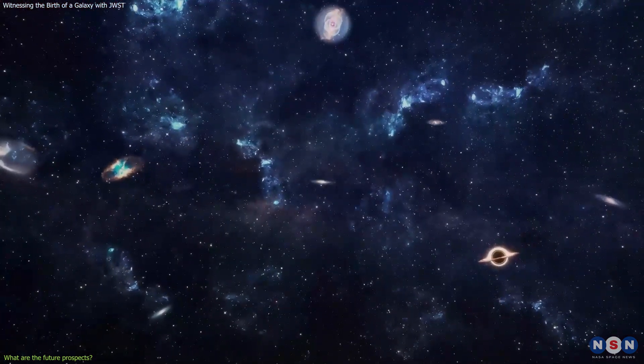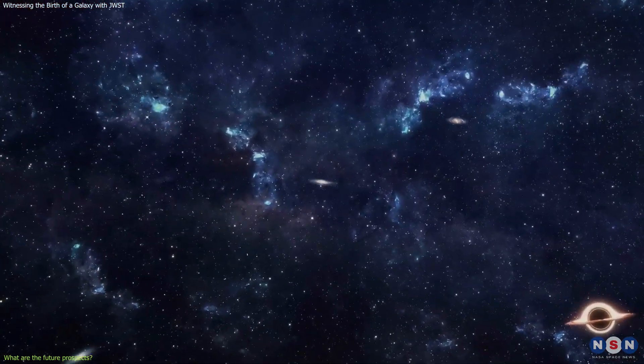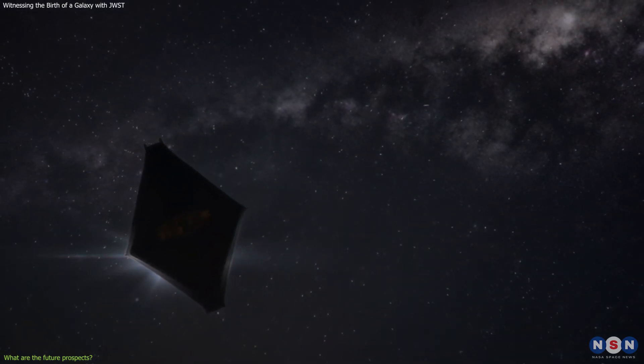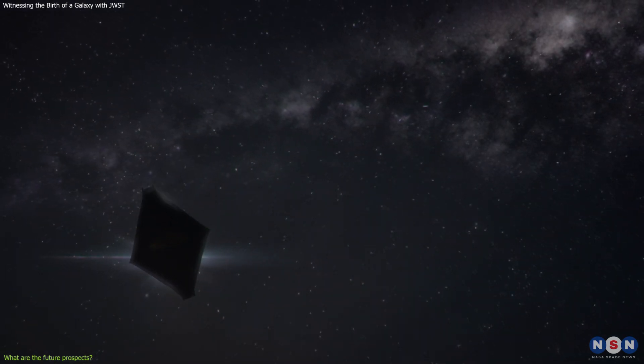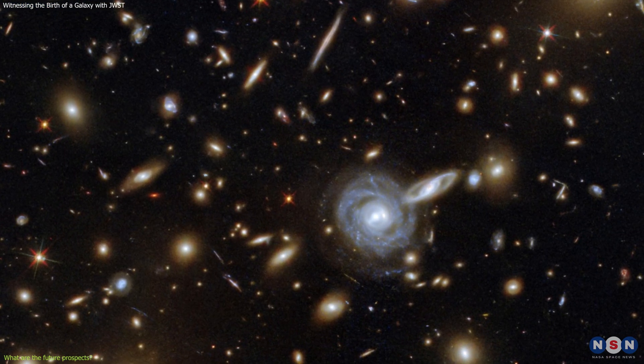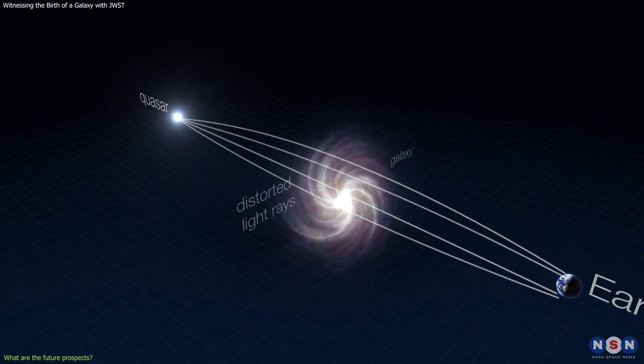It has already observed hundreds of candidate galaxies in the early universe, using various surveys and programs, such as CANUCS, which we mentioned earlier. These galaxies are selected based on their brightness, colors, shapes, or gravitational lensing effects.